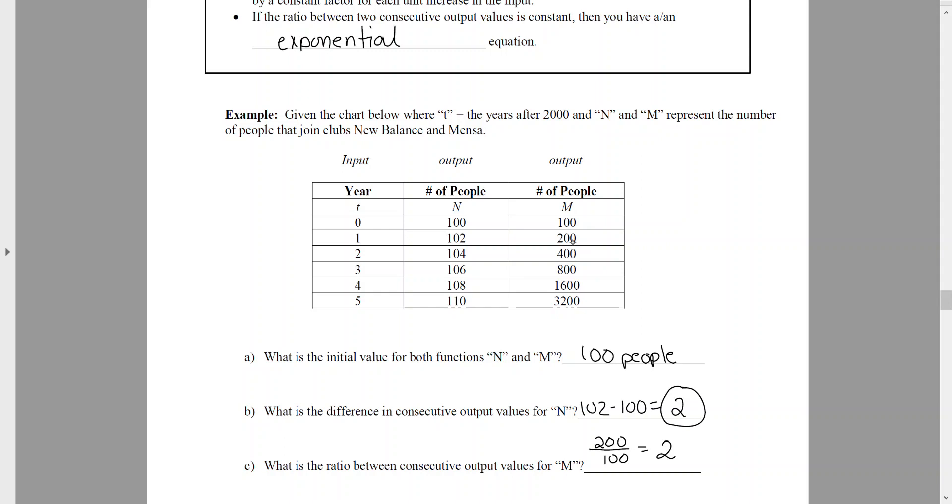Same thing for 400 divided by 200. It would still reduce to the number 2, or 800 divided by 400. Any pair of consecutive numbers, 3200 divided by 1600, is going to give me a ratio of 2.